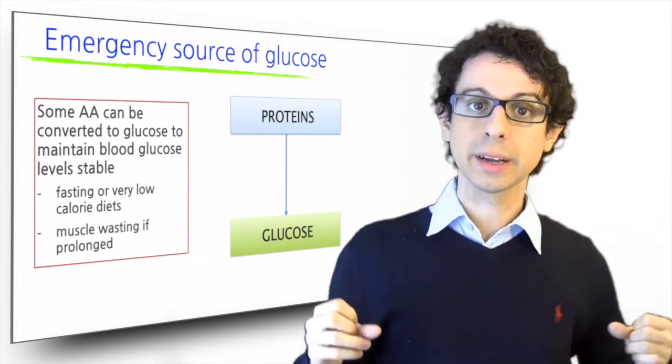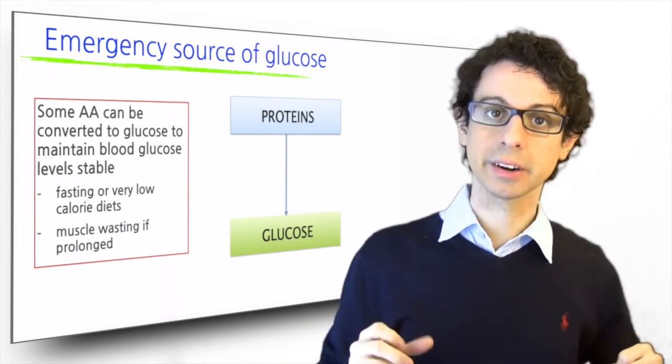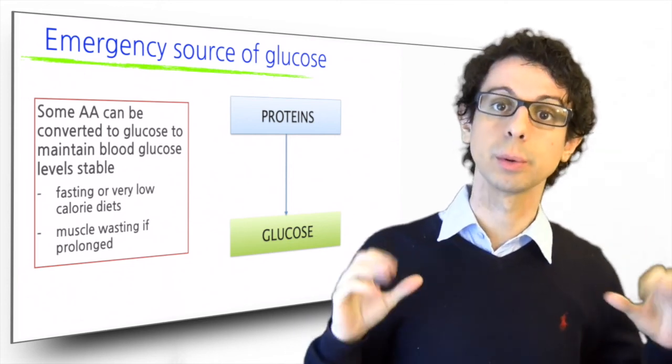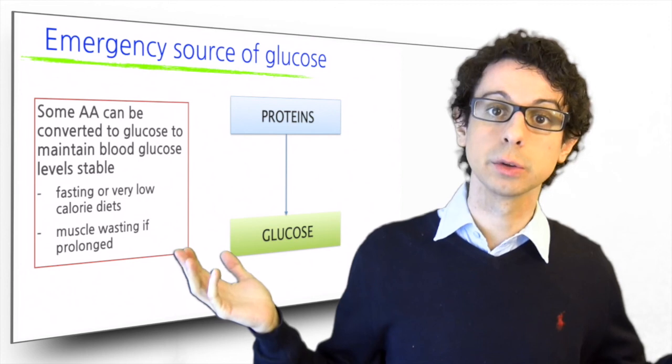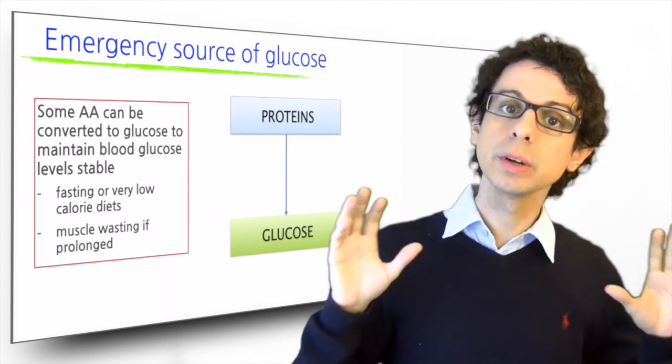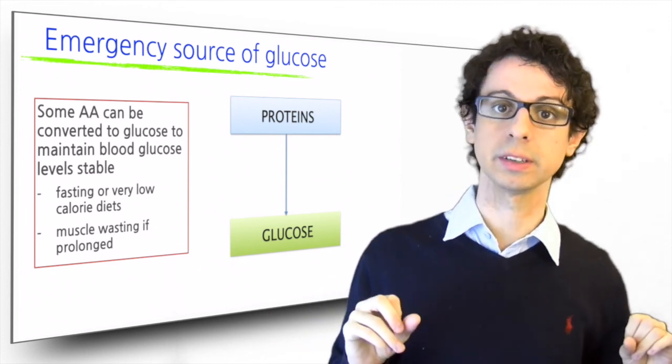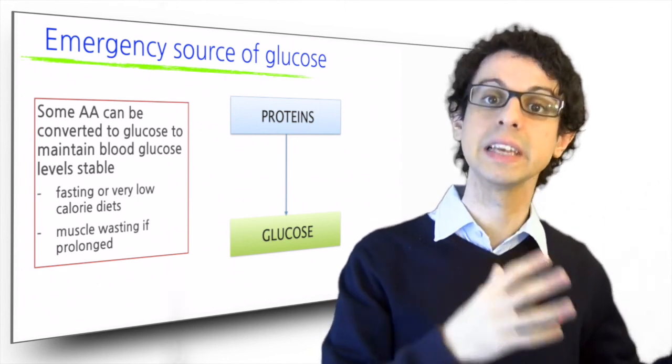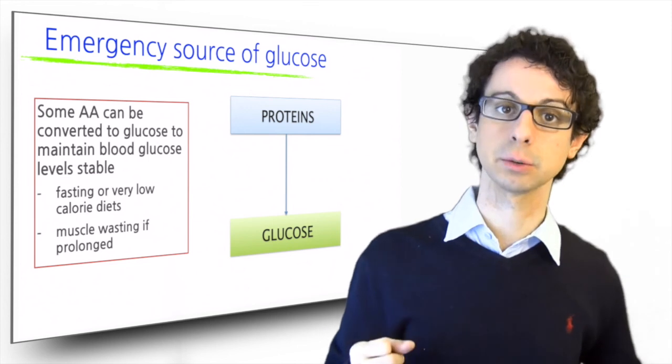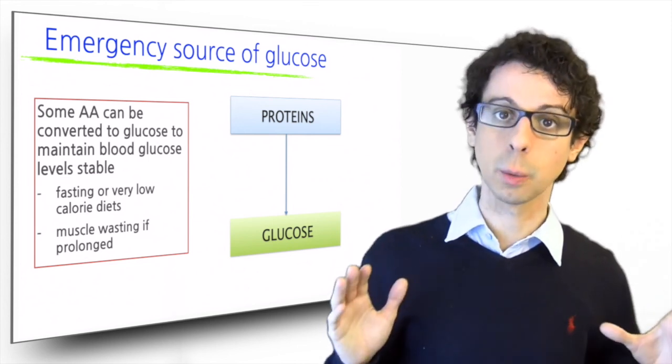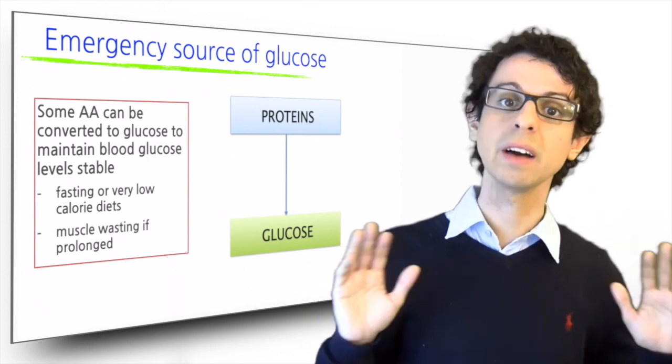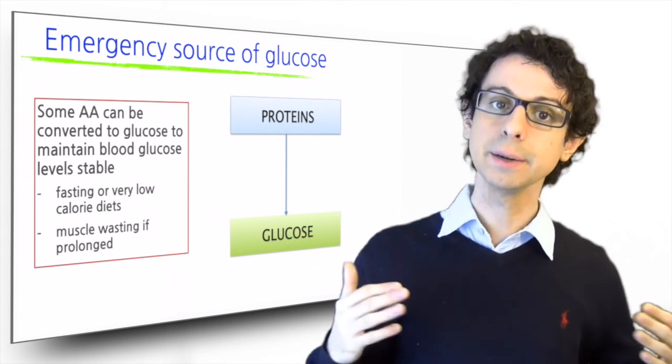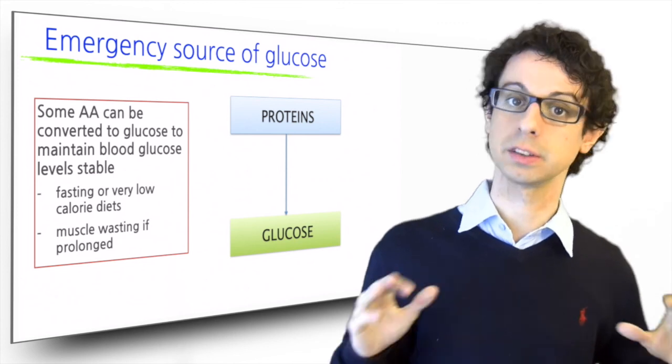Our only option is making glucose from proteins, since we cannot make glucose from fat. But remember, we don't have any storage of proteins either, so if they don't come from food, we'll have to go and steal these proteins from lean mass, resulting in muscle wasting. This is the reason why, if you want to lose weight, you never just stop eating, because then you would start destroying muscle and lean mass to maintain blood glucose stable.